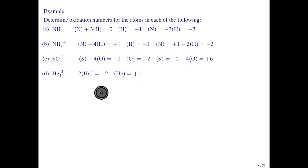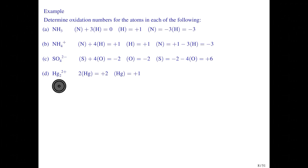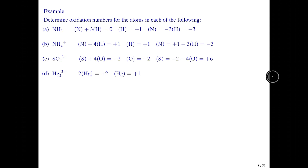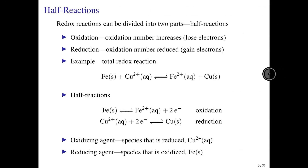For the mercury(I) cation, there are two mercury atoms and their oxidation states must sum to the ion charge of plus two. Dividing by two tells us that each mercury atom has a plus one oxidation state, which is why it is called the mercury(I) cation. We'll go ahead and stop this video here and pick up with half-reactions in the next one.